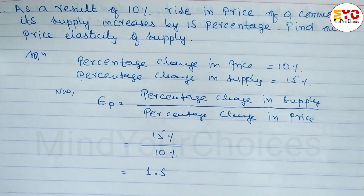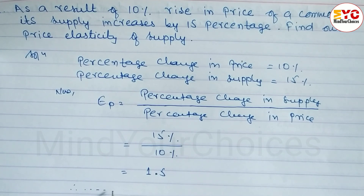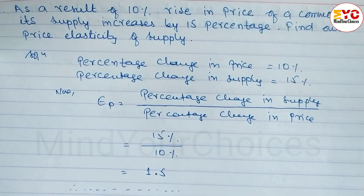So the price elasticity of supply is 1.5. Hope you understand this question taken from elasticity of demand and supply.